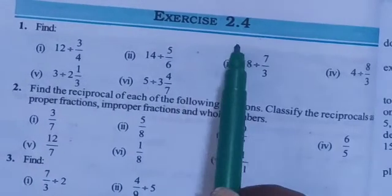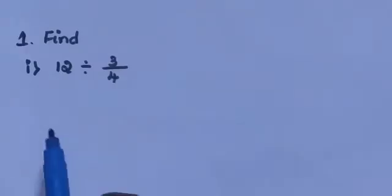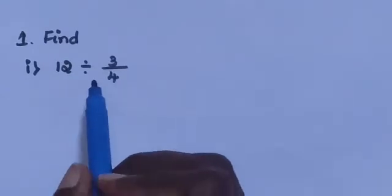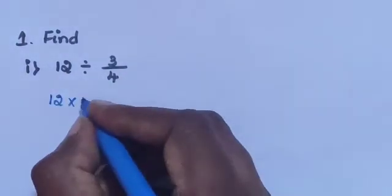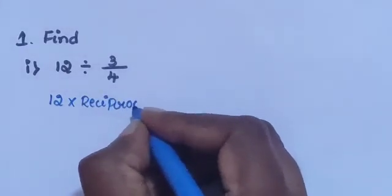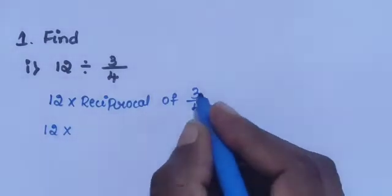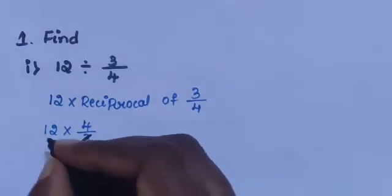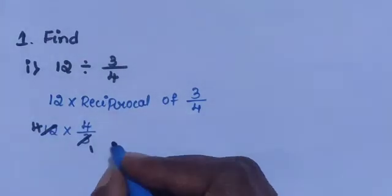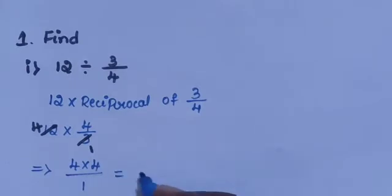Now let's start Exercise 2.4. First question — find. Sub-question 1: 12 divided by 3 by 4. Remove the division sign using the reciprocal of the fraction: 12 multiplied by the reciprocal of 3 by 4, which is 4 by 3. 3 cancels with 12 giving 4; then 4 into 4 divided by 1 equals 16 divided by 1, which is 16.